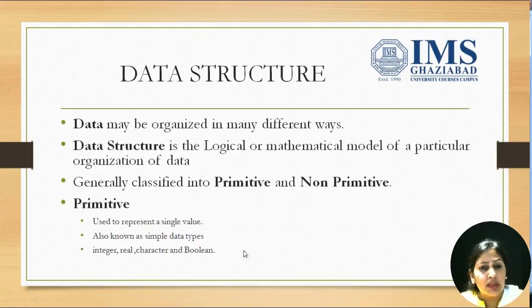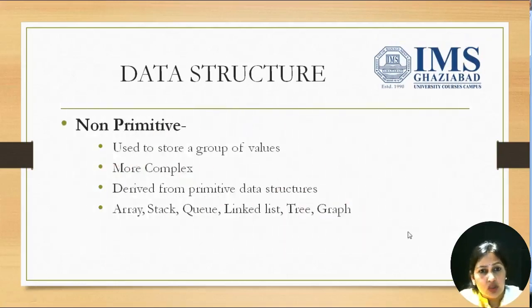As we have discussed, primitive data structures represent a single value. That's why they are also known as simple data types. Whereas non-primitive data types can store a group of values. That's why they are more complex data structures.